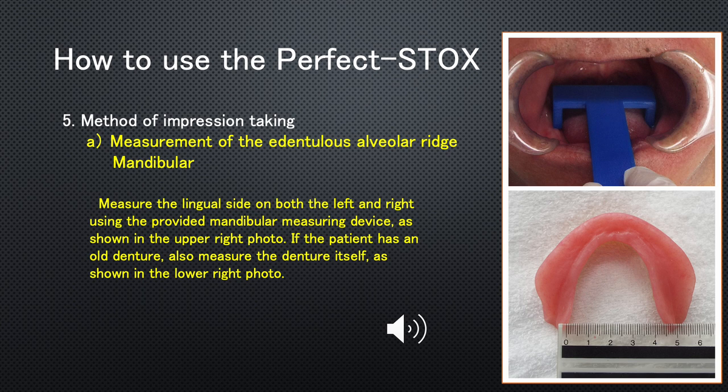Measurement of the Edentulous Alveolar Ridge — Mandibular: Measure the lingual side on both the left and right using the provided mandibular measuring device, as shown in the upper right photo. If the patient has an old denture, also measure the denture itself, as shown in the lower right photo.